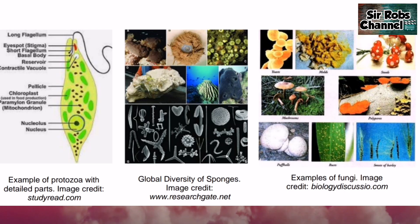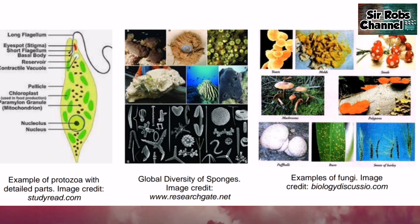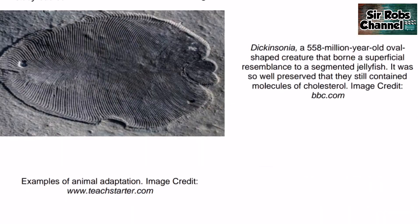There are examples of protozoans, sponges, and fungi — you can search these on Google for detailed parts. Also, we have the Dickinsonia, a 558-million-year-old oval-shaped creature that bore a superficial resemblance to a segmented jellyfish. It was so well-preserved that it still contained molecules of cholesterol.